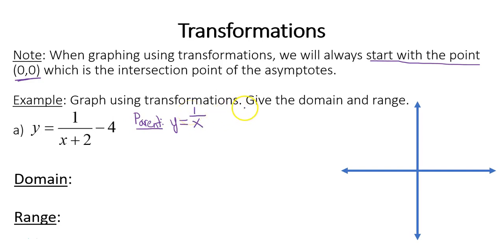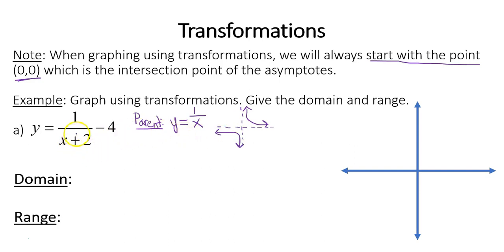I'll draw a rough sketch of what 1 over x looks like — a vertical asymptote and a horizontal asymptote, with curves in the top right region and the bottom left region. Now we have a couple of transformations here. The plus 2, since it's happening within the fraction with x, is a horizontal shift — a shift left 2. The minus 4 after everything, outside of the fraction, indicates that we should go down 4.